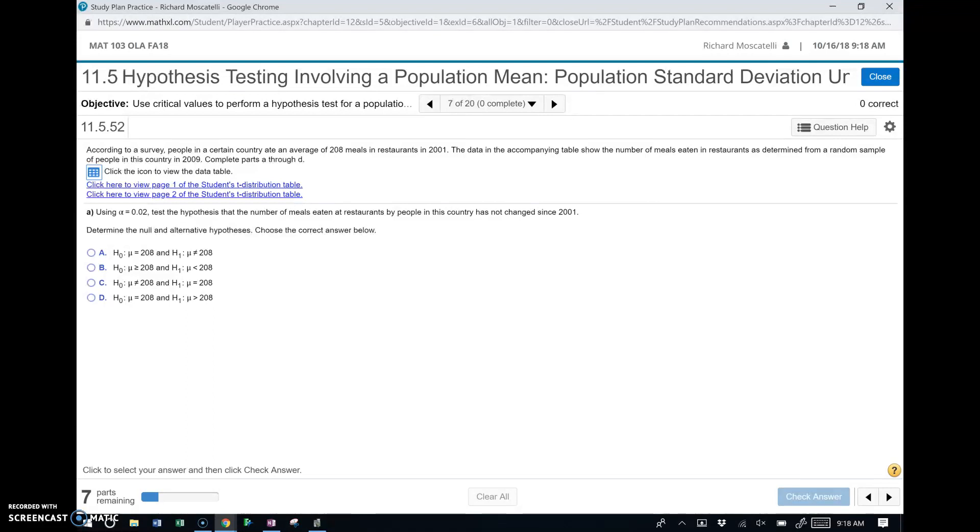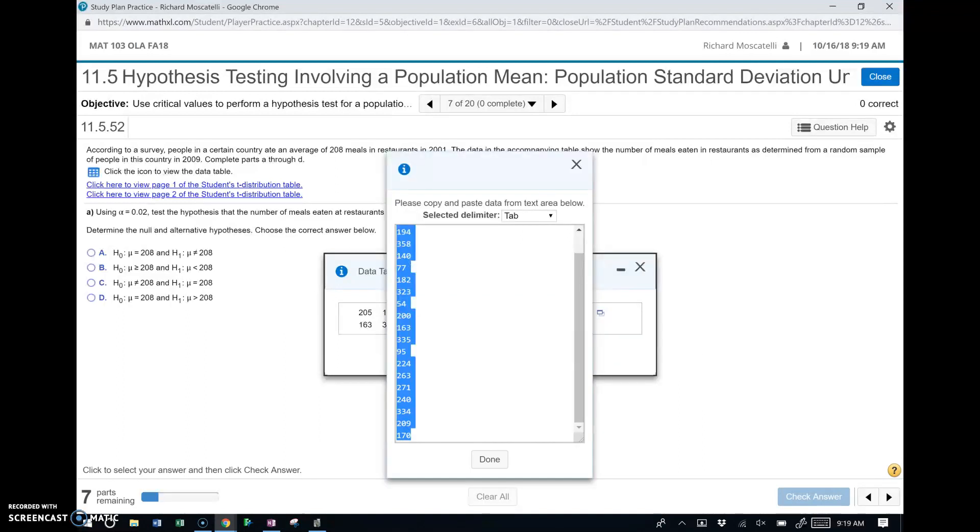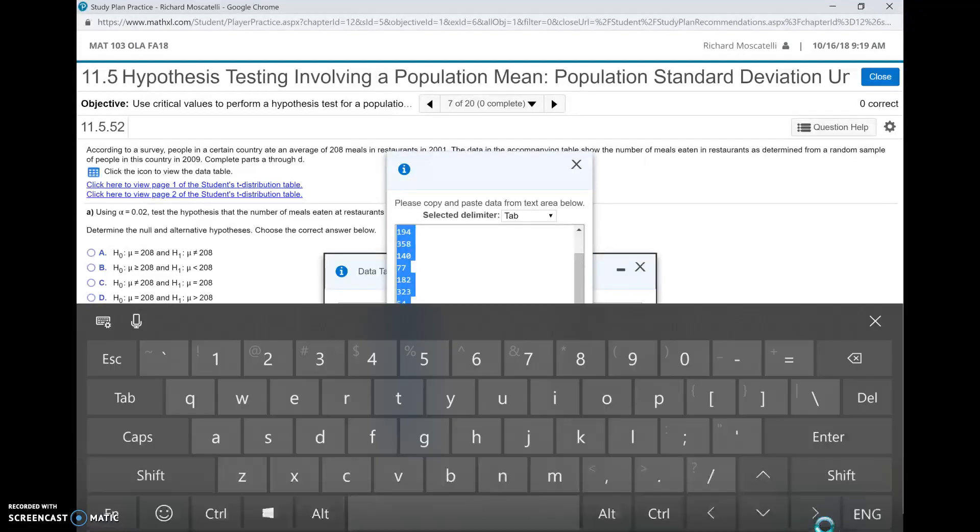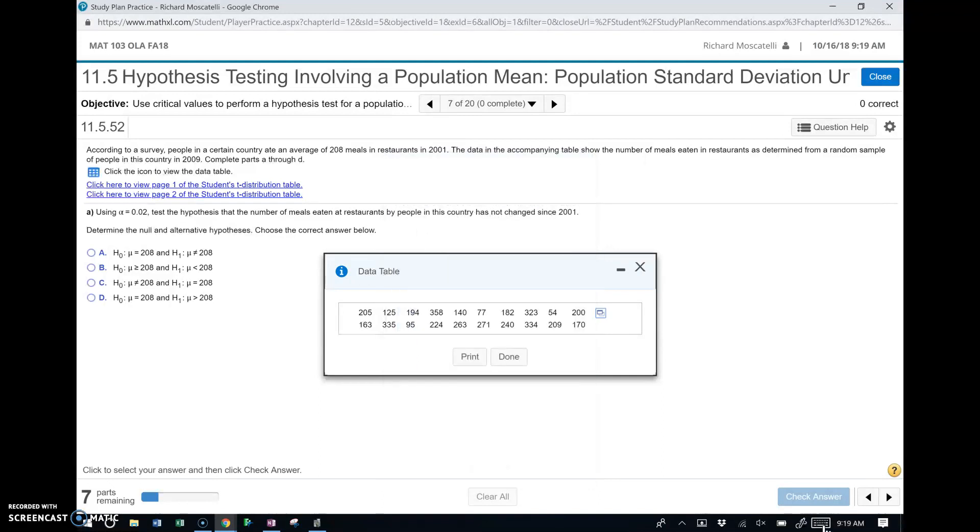Alright, so first let's give a look here. The data is in this little table. Let's open it up. Looks like we got 20 pieces of data, randomly sampling 20 people and seeing how many meals they ate that particular year. There's a little icon right here which will allow us to copy the data to our clipboard. So let's say copy to clipboard. I'm just going to control C that really quick. So that's on my clipboard. We're going to have to paste that into JMP in a few minutes. Let me close this data up.